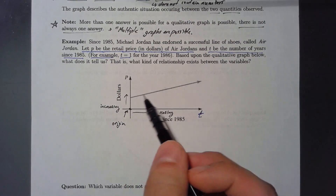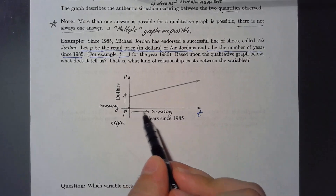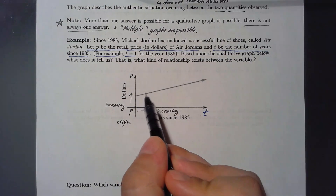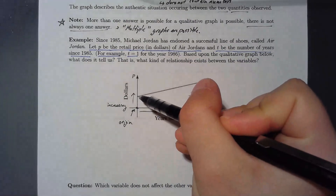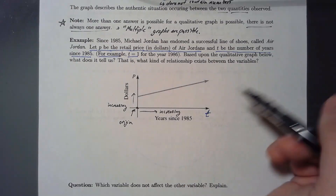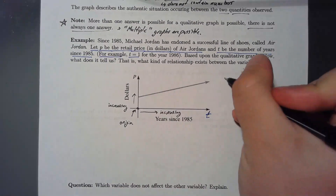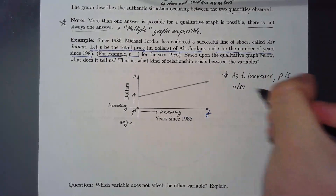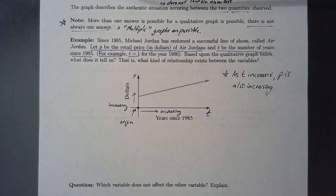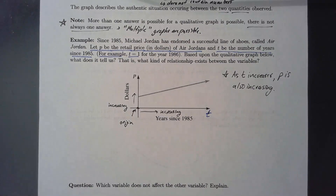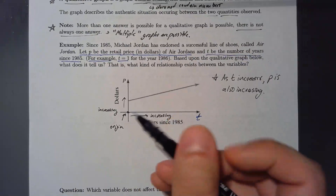If we look at this graph, as T gets bigger — as we go from the origin to the right — as T increases, what is P doing? P is increasing as well because it's going up. I start here, and as I go to the right, P is up here as well, so it's going up as T goes to the right. As T is increasing, P is also increasing.